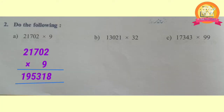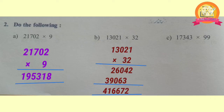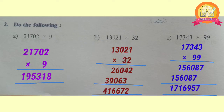Second roman: do the following multiplications. A: 21,702 multiplied with 9, we get 1,95,318. B: 13,021 multiplied with 32, we get 4,16,672. C: 17,343 multiplied with 99, we get 17,16,957.